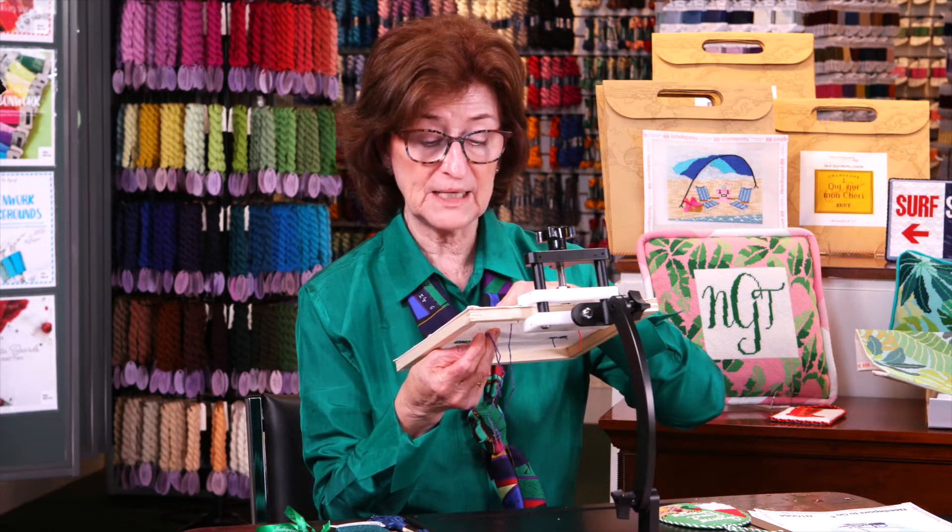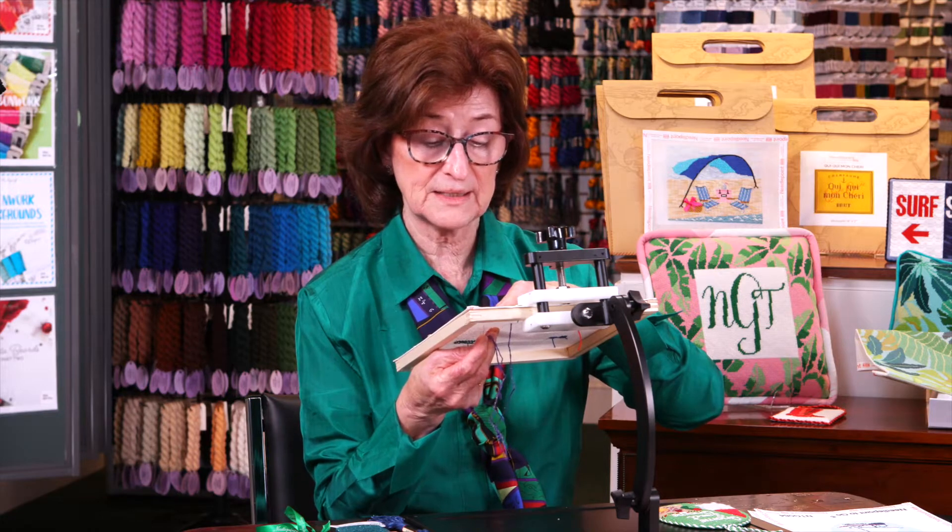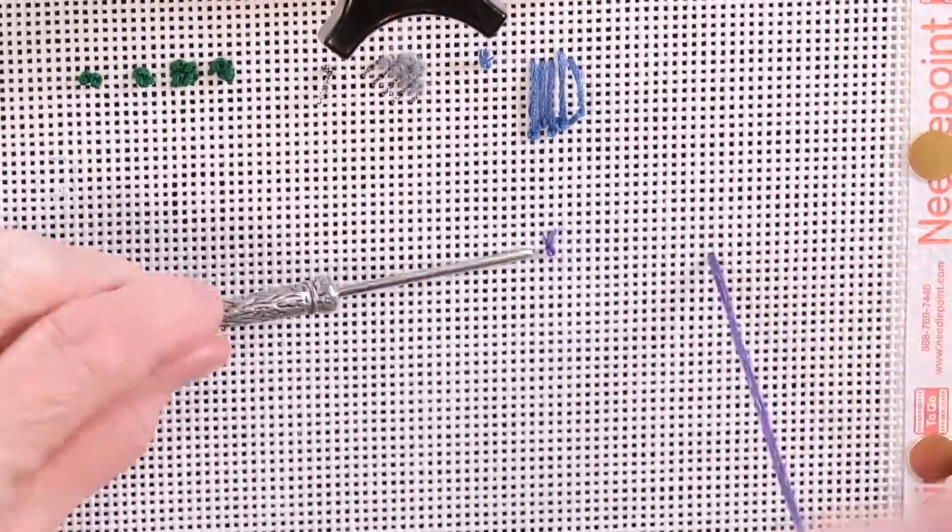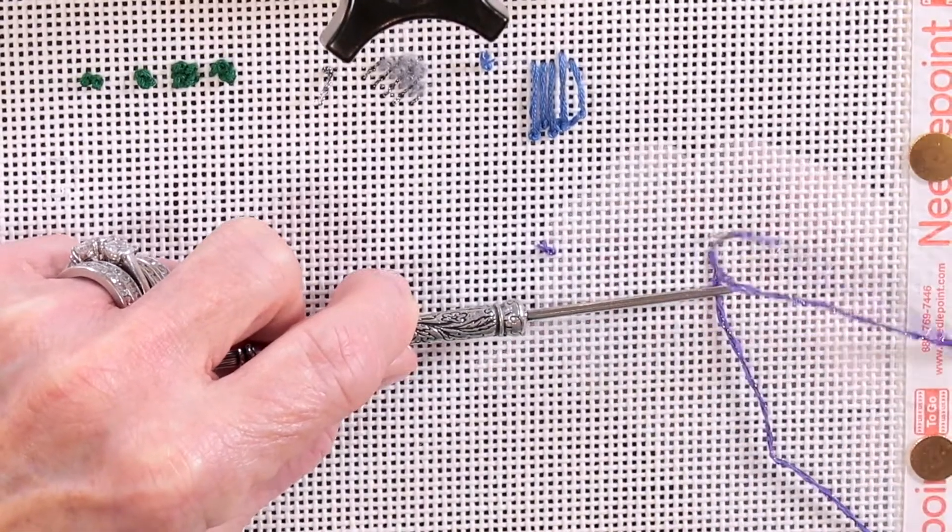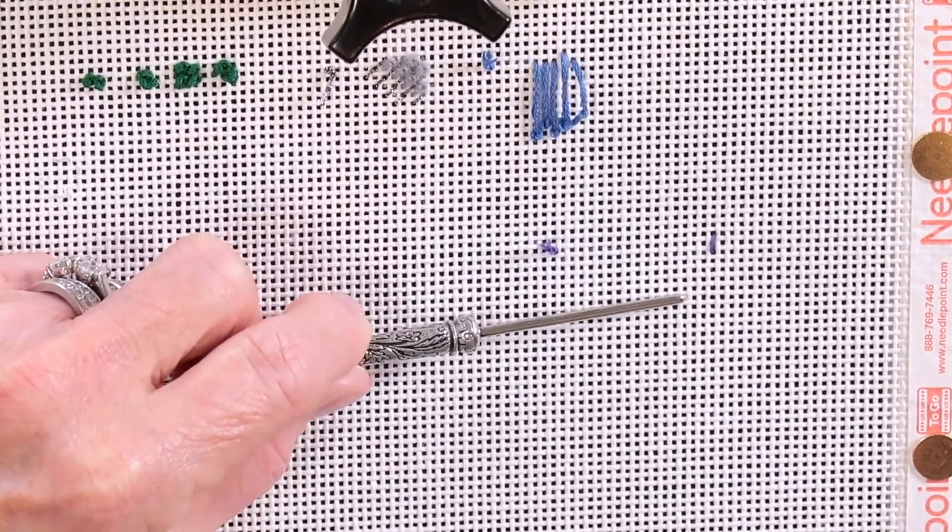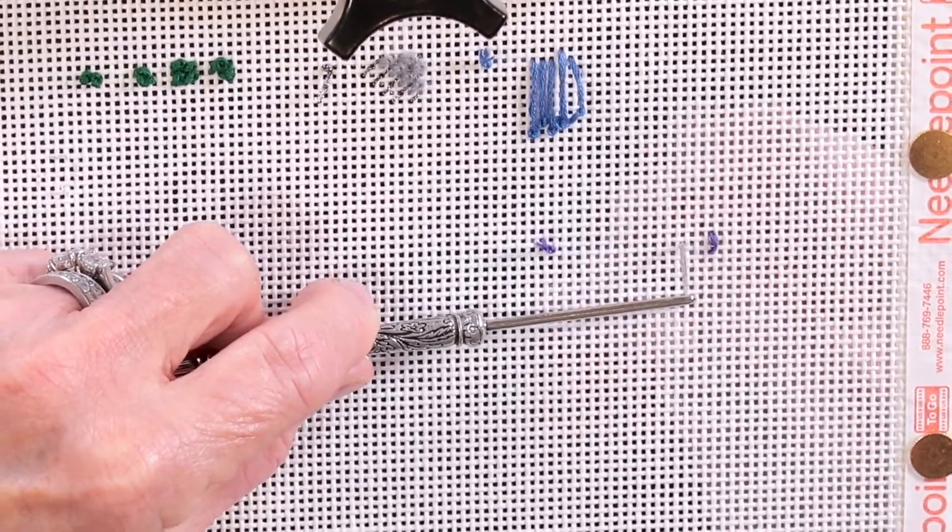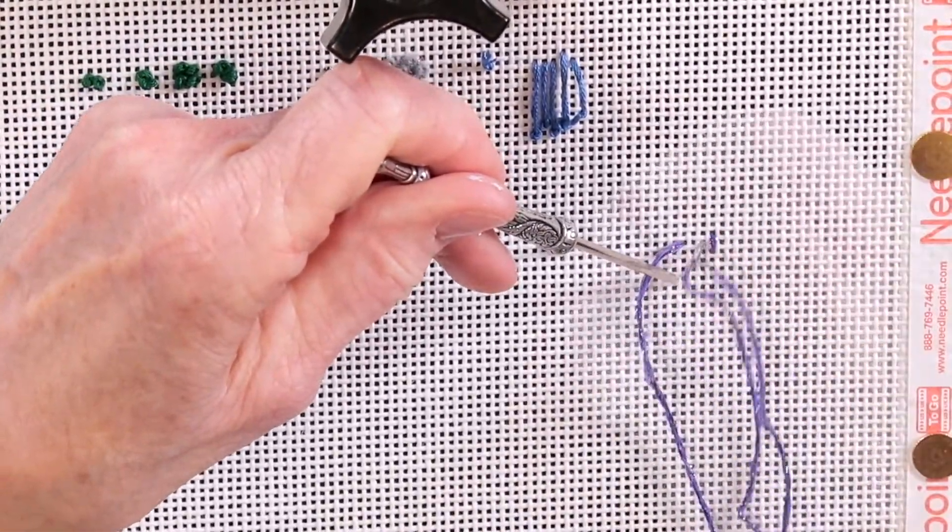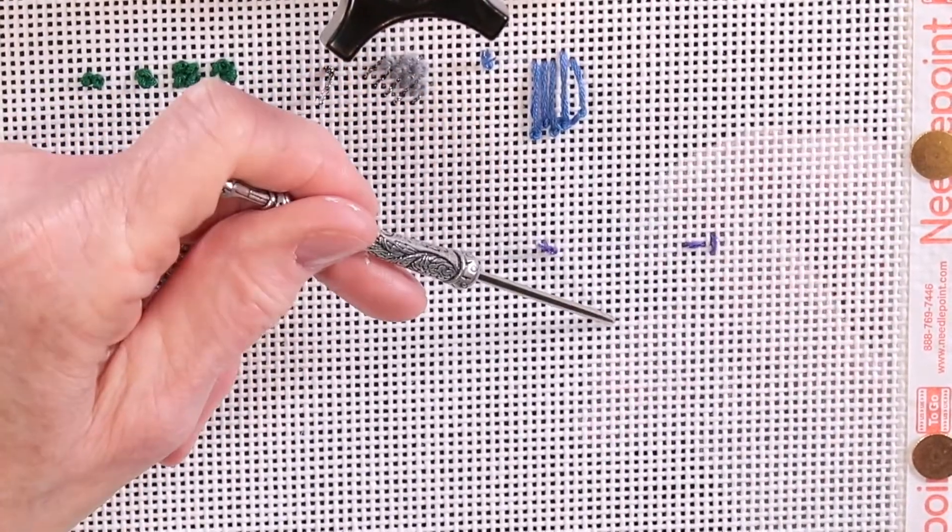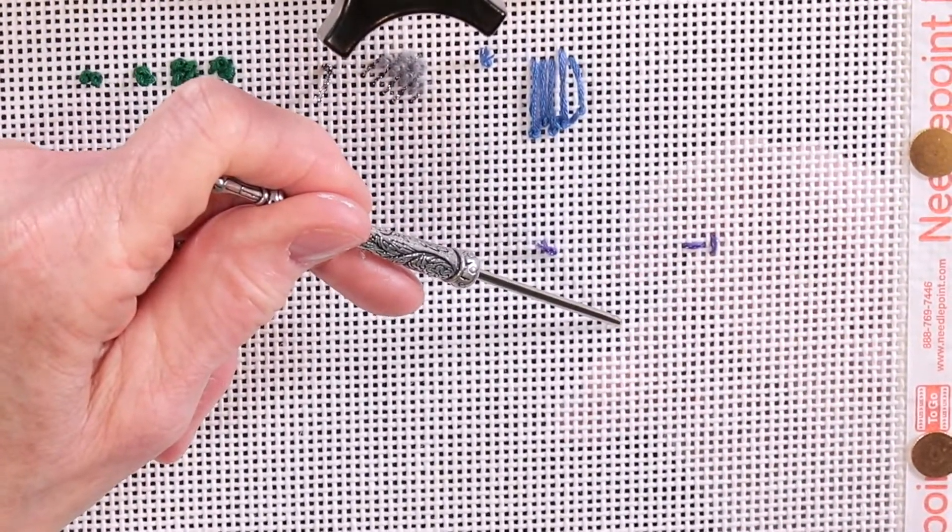Again, a very easy stitch. This is a straight stitch. So we're covering two horizontal rows and then what we're going to do is we're going to go over two vertical rows and we're going to alternate it going across.